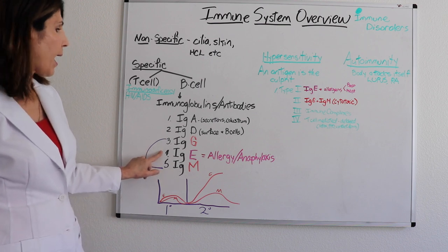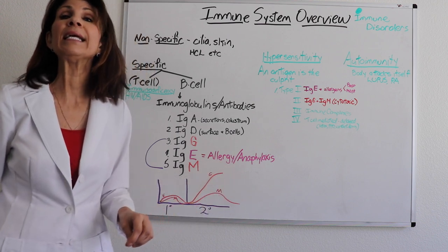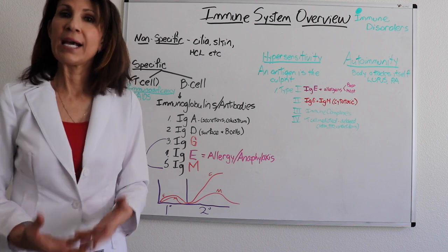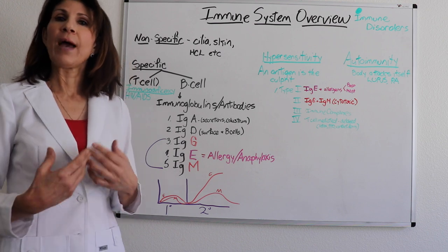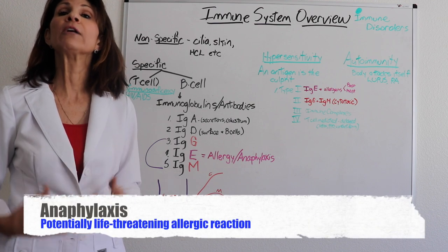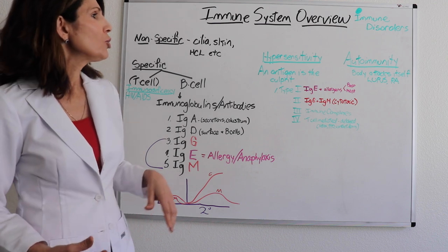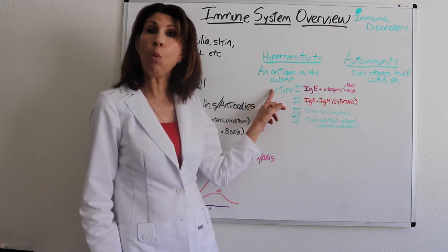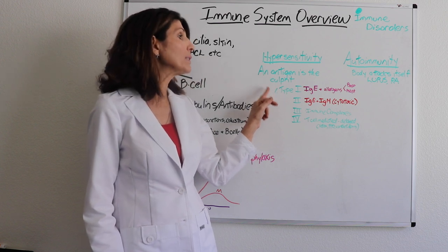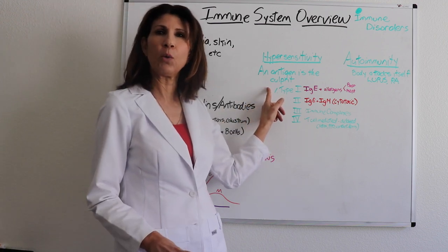Let's take a look at immunoglobulin E. IgE is the one involved in allergy and anaphylaxis. Anaphylaxis is a very severe, potentially life-threatening allergic response. So that's a type one hypersensitivity disorder. It's called type one because it is IgE-mediated — that's what puts it in that category.